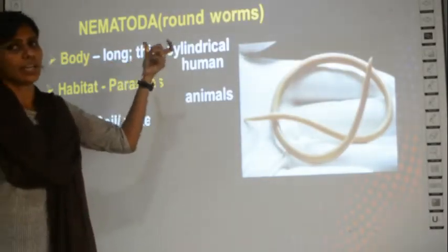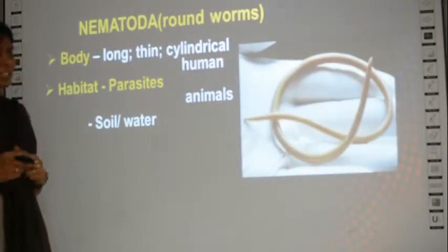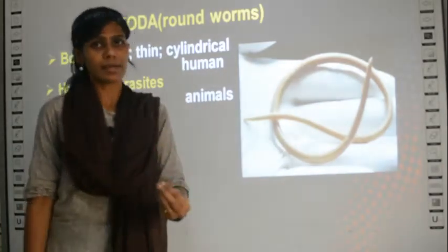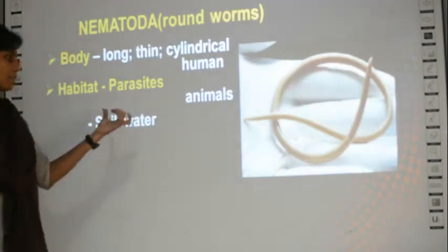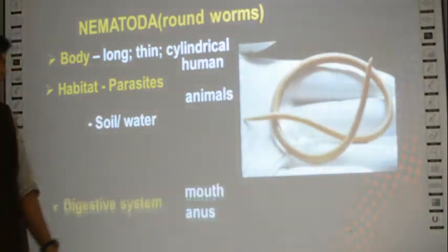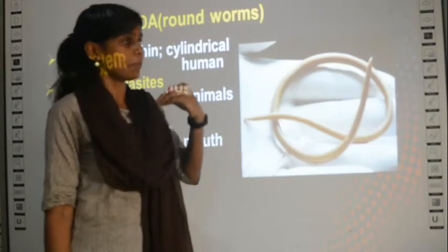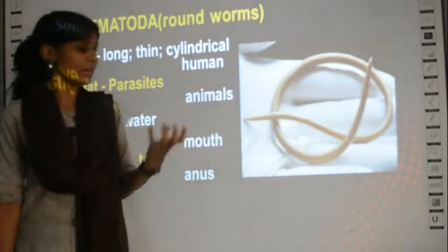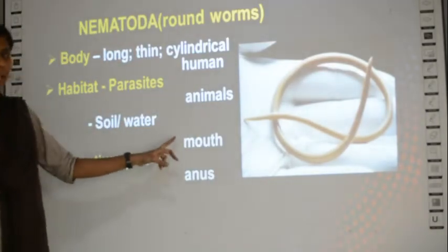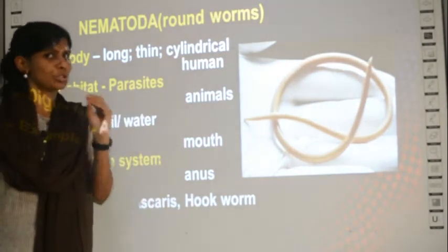The next group is Nematoda, also called round worms, because their body is cylindrical in shape unlike the flat worms. Like Platyhelminthes, they also exist as parasites inside human beings or animals, though sometimes they can exist in soil and water. Their digestive system includes two parts: a mouth on one end and an anus on the other end for releasing waste. Examples are Ascaris and hookworms.